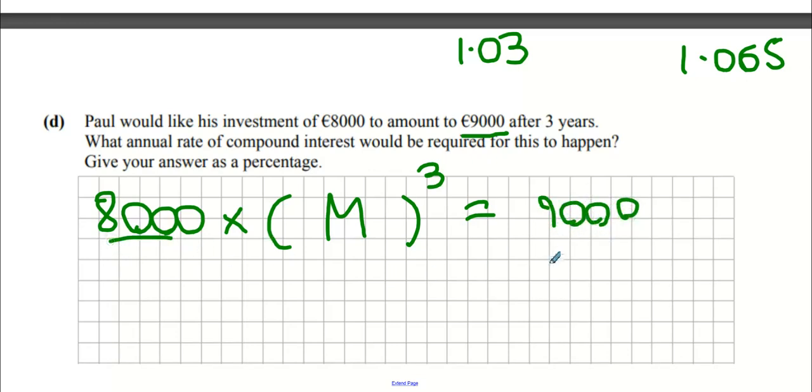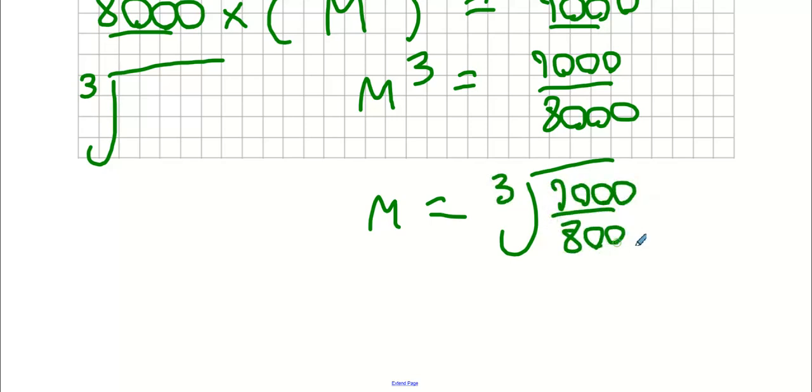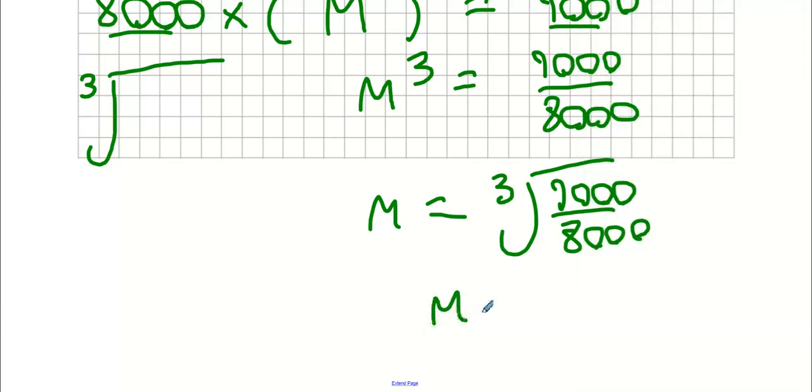What button did we use to get rid of M cubed? Cube root. We're expecting an answer bigger than 1. 1.04. And what percentage is 1.04? It's 4% because you're making it 4% bigger.